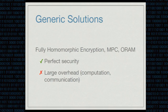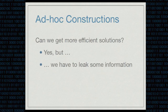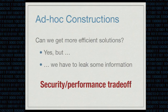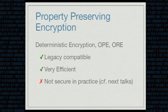So you might ask if we can get more efficient solutions by designing ad-hoc constructions. The answer is yes, but as Daniel explained, you have to leak some information. Another really important point about searchable encryption is to understand the security-performance tradeoff for your construction. You can choose a very secure construction with generic solutions, but you will have bad performance. Something you can use is property-specific encryption, such as deterministic encryption, OPE, or RE. This is interesting because it is legacy compatible and very efficient. Unfortunately, as you will see in next talks, this is not really secure in practice, at least for really large databases.